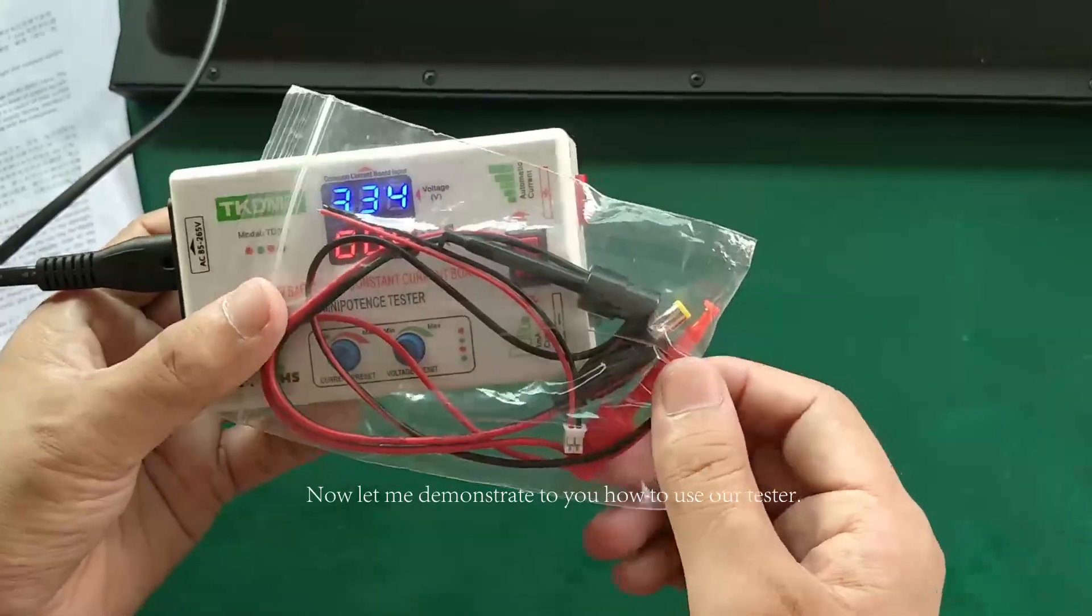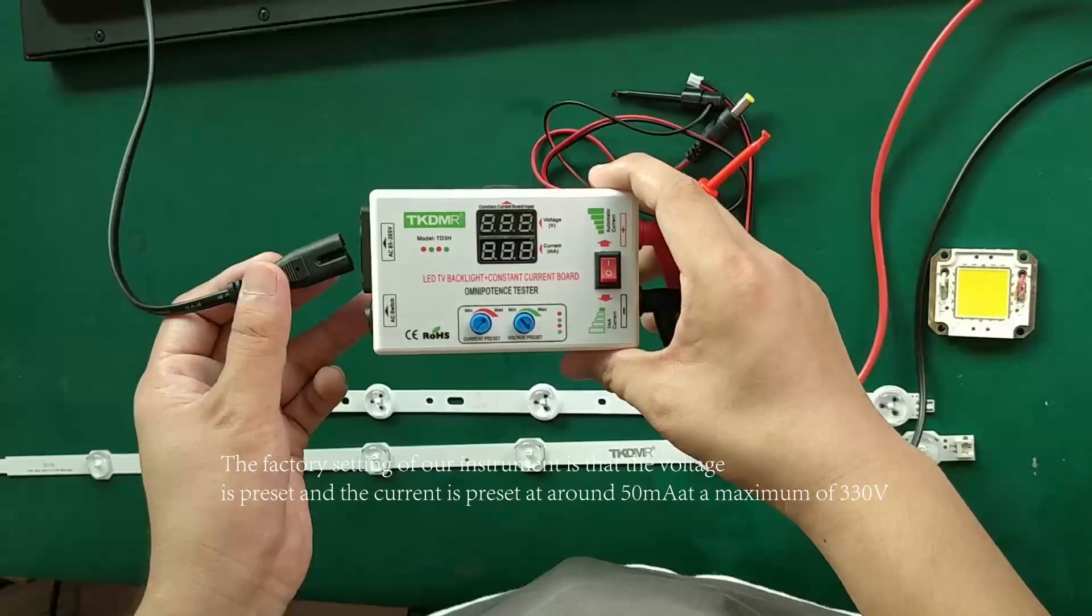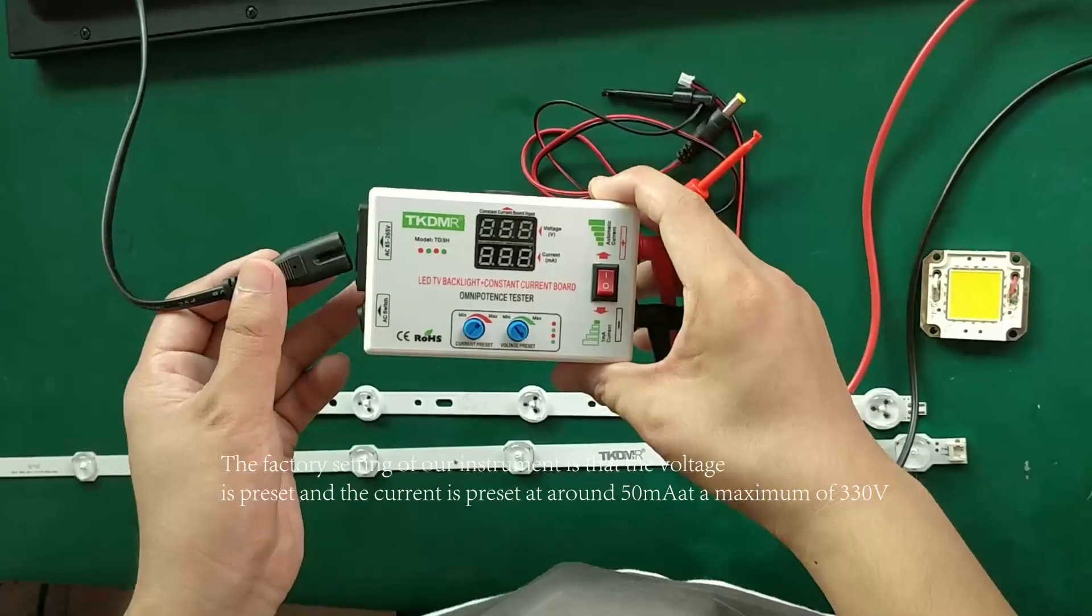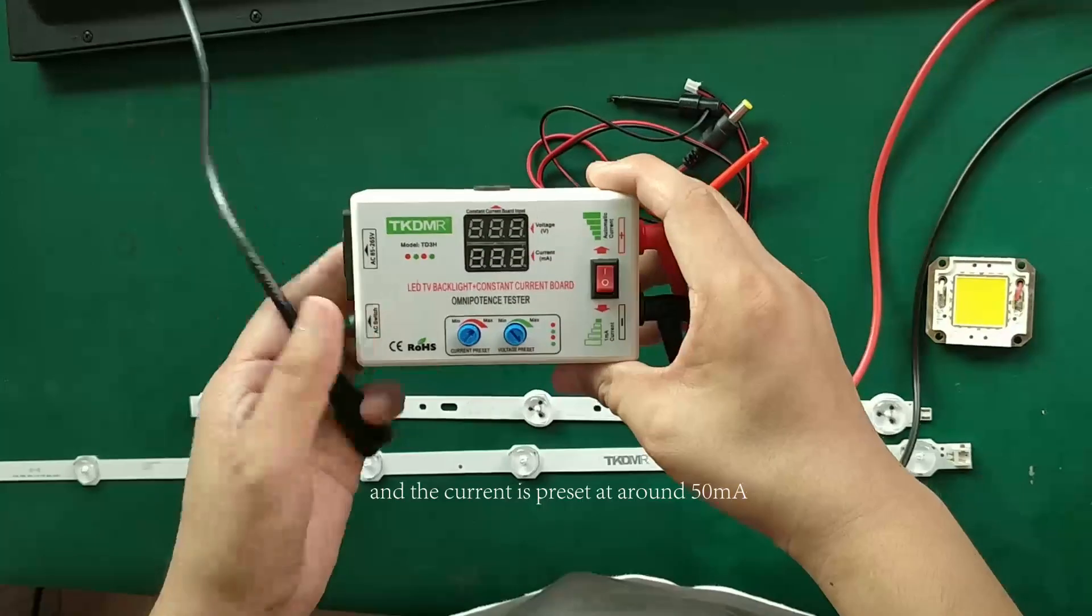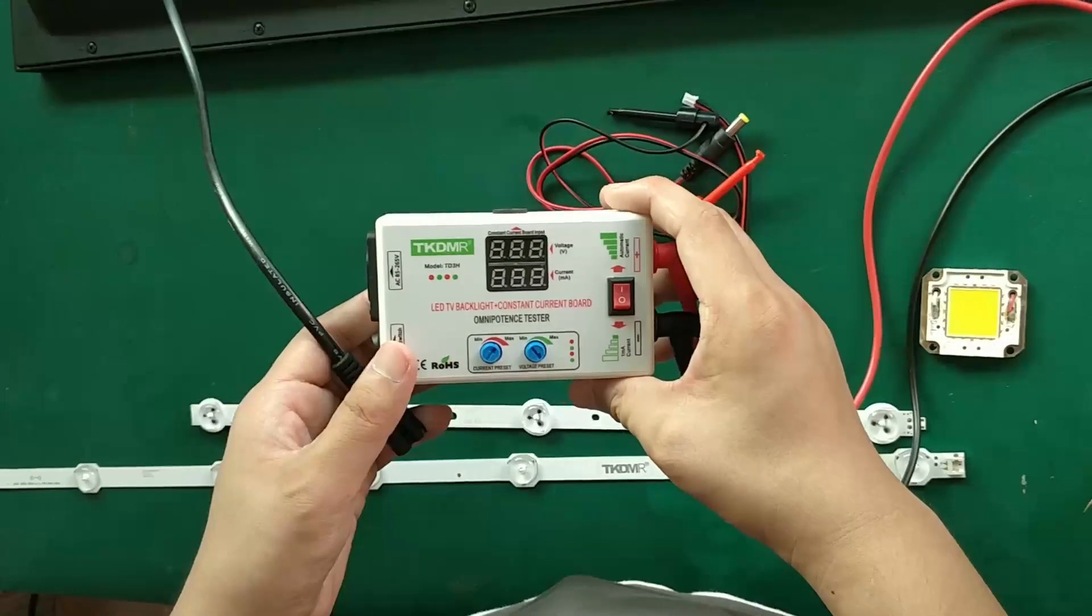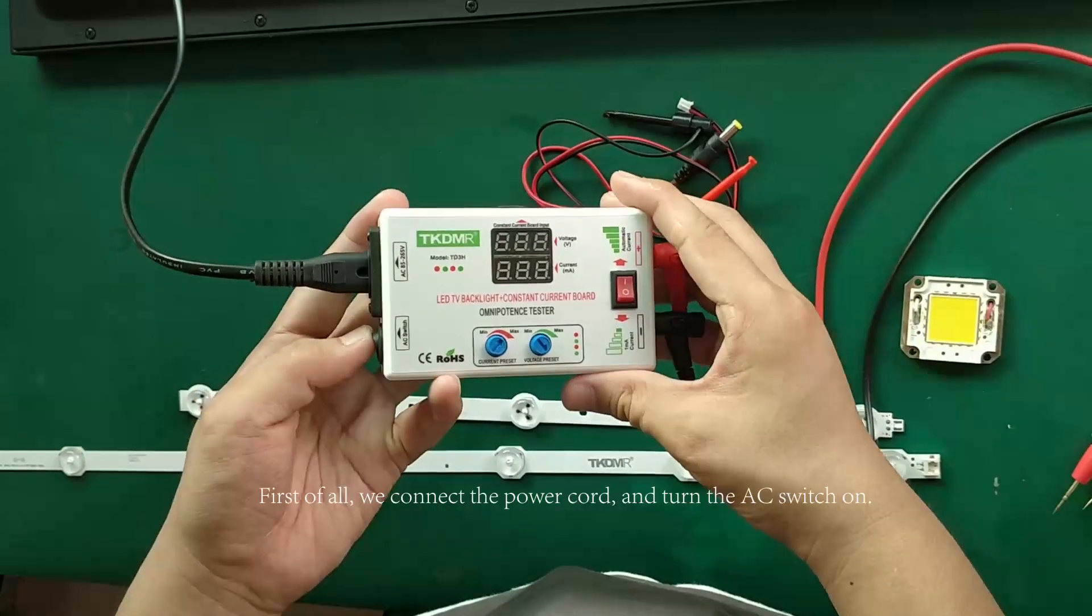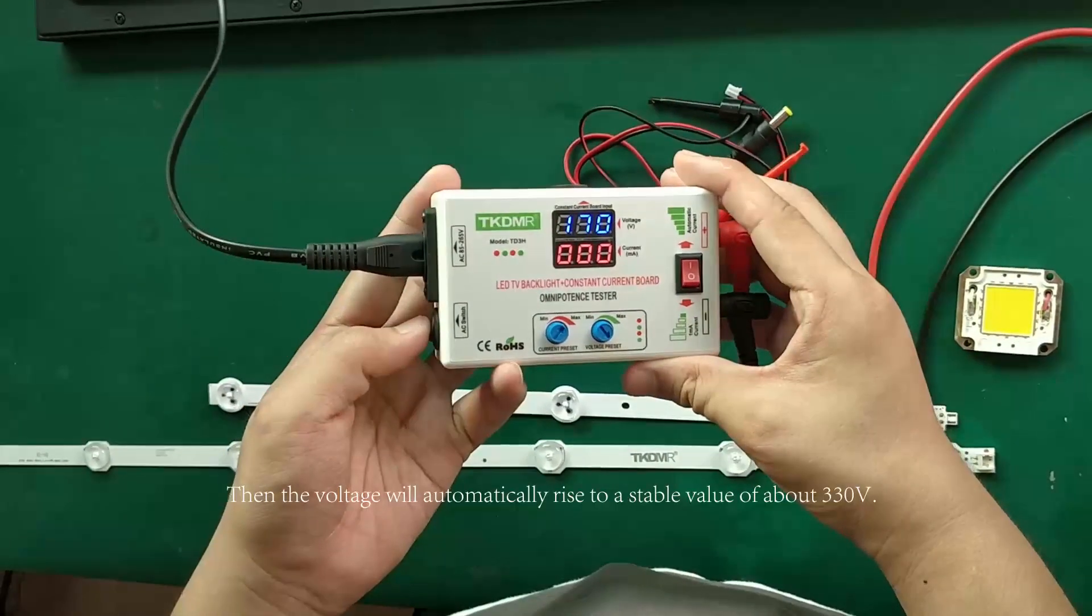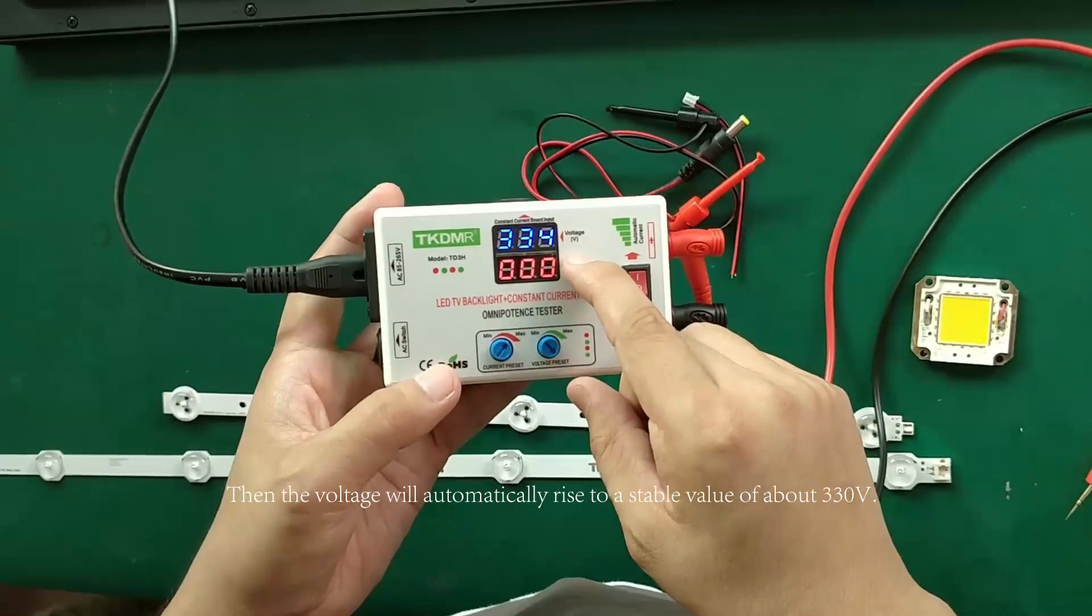Okay, now let me demonstrate to you how to use our tester. The factory setting of our instrument is that the voltage is preset at a maximum of 330 and the current is preset at around 50 milliampere. First of all, we connect the power cord and turn the AC switch on. Then the voltage will automatically rise to a stable value of about 330.